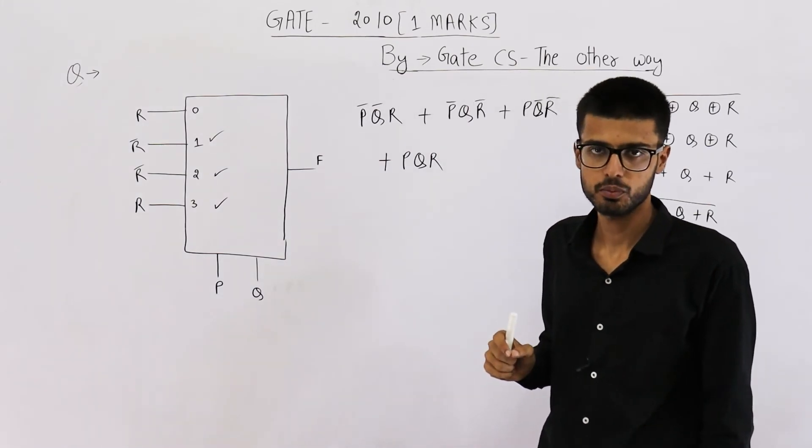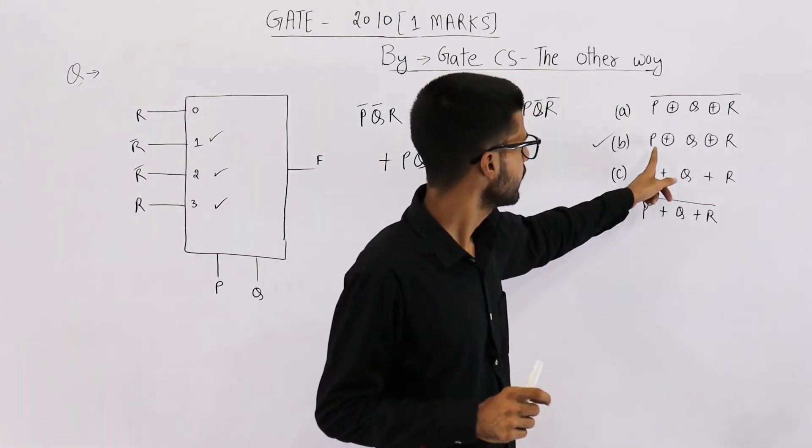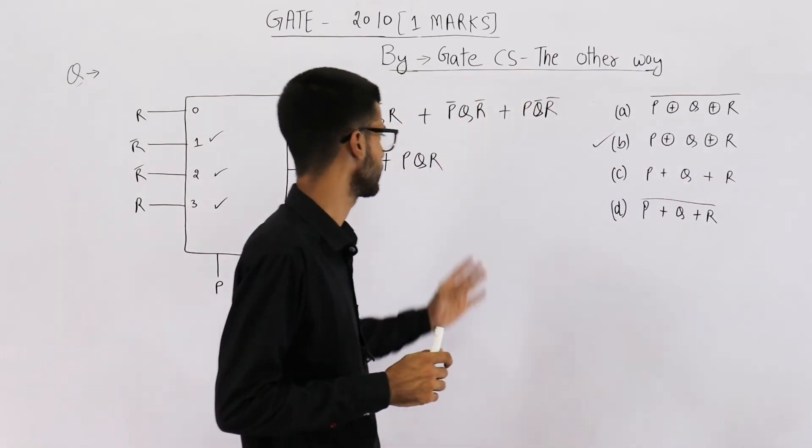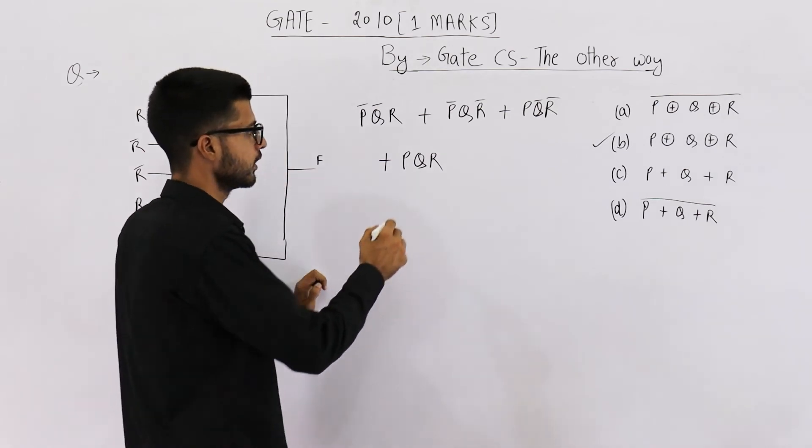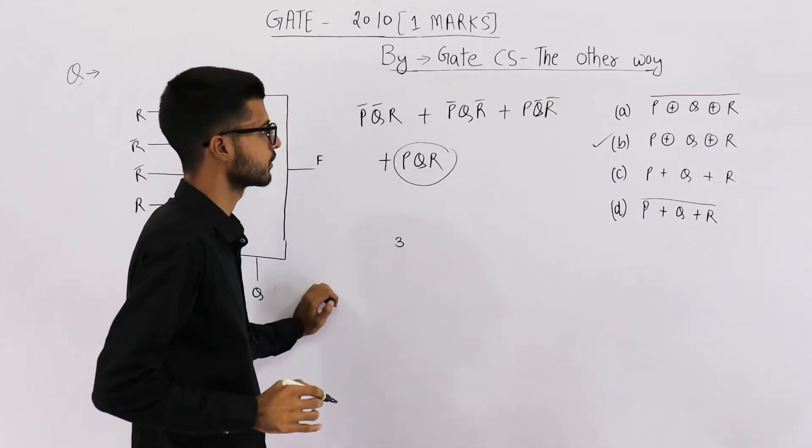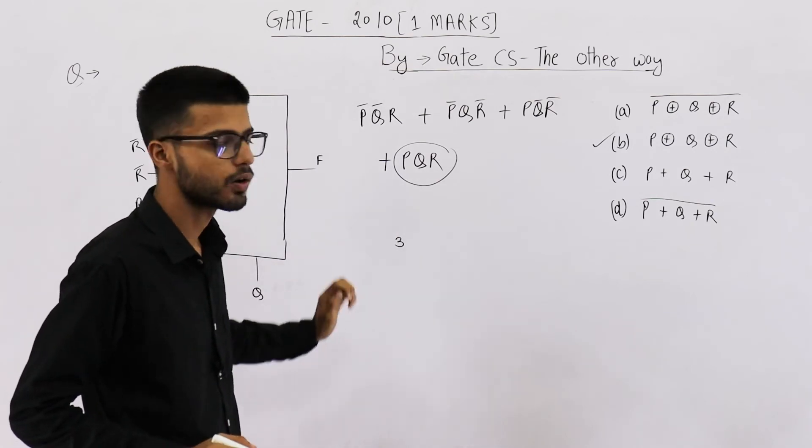When odd number of these three variables are one, the output is going to be one. That is what this equation is saying. This says all three are one. Three is odd number.